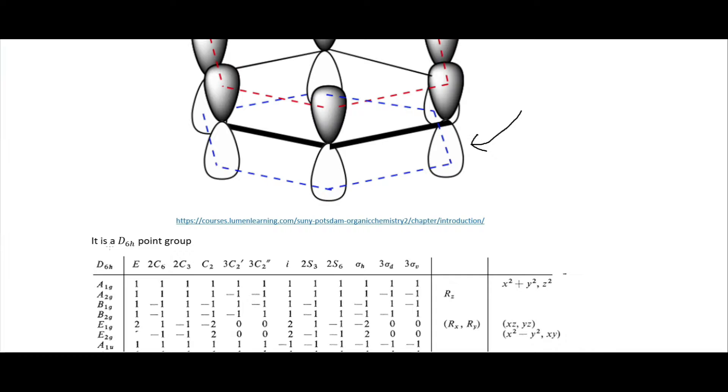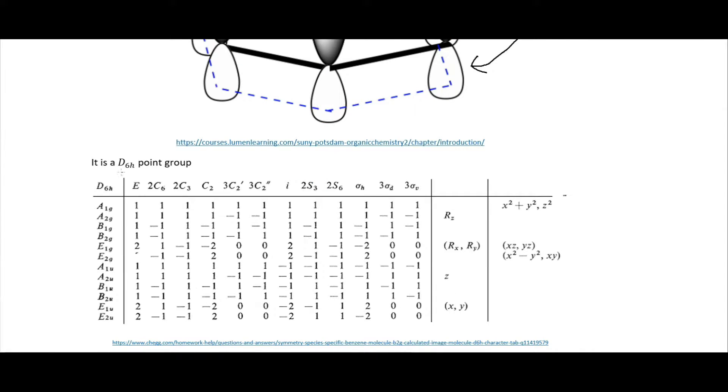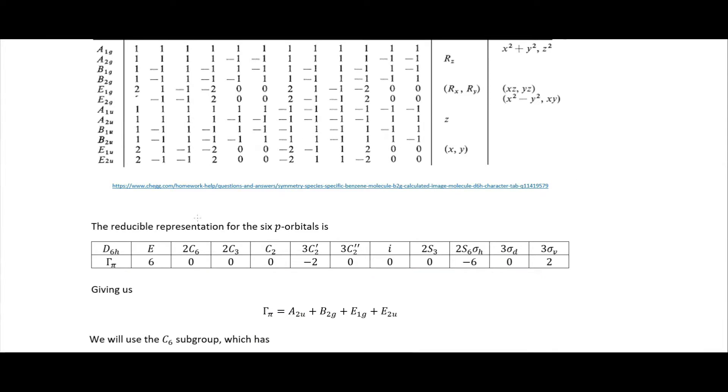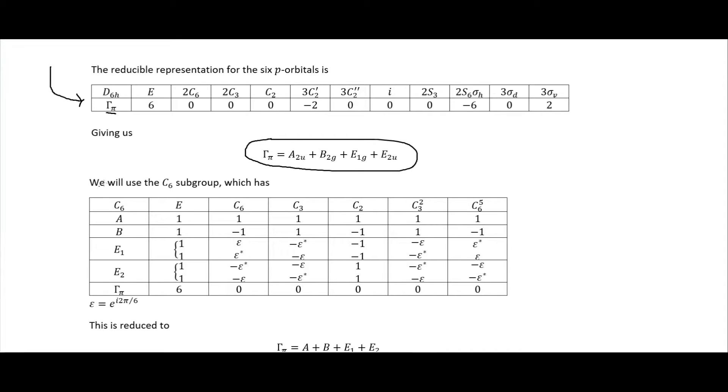And so benzene is a D6h point group, which gives us this rather large looking table here. The reducible representation, if we went through all the matrices for each of these and took the character of them, would give us this right here. So we have this gamma sub pi here for our reducible representation, which ultimately gives us this right here, this addition of all the irreducible representations there.